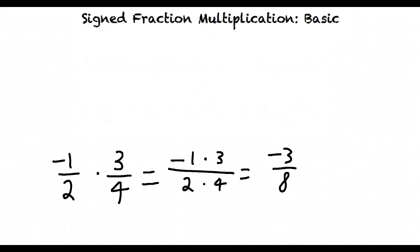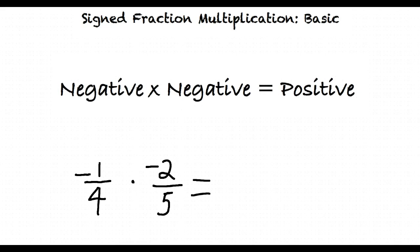What happens if both fractions are negative? If we take negative 1 fourth times negative 2 fifths, the answer will be positive because both fractions are negative. Two negative numbers multiplied together equals a positive number, so therefore our answer is 2 over 20.